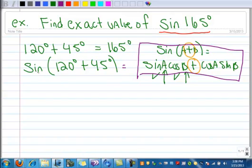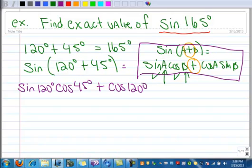So let's go ahead and expand this. That's going to be sine 120 times cosine 45° plus cosine 120 times sine 45°. And let's substitute in the values.